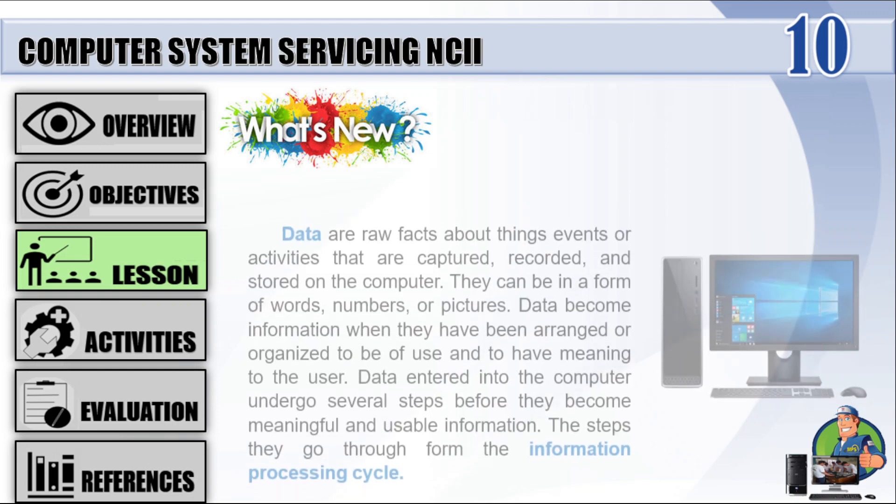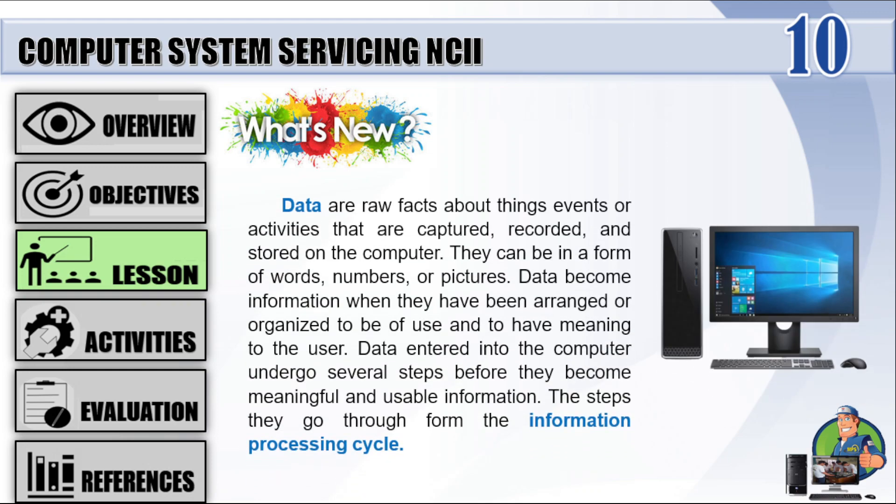Data are raw facts about things, events, or activities that are captured, recorded, and stored on the computer. They can be in the form of words, numbers, or pictures. Data become information when they have been arranged or organized to be of use and to have meaning to the user. Data entered into the computer undergo several steps before they become meaningful and usable information — the steps they go through form the Information Processing Cycle.